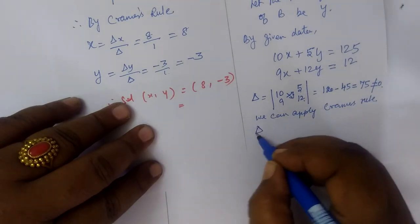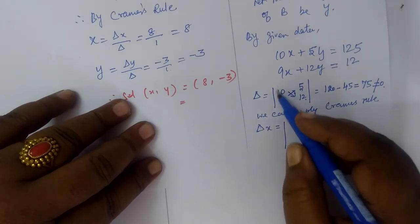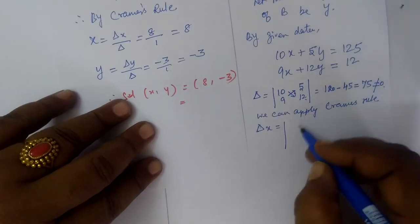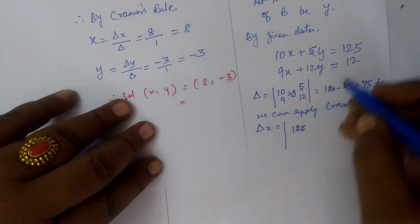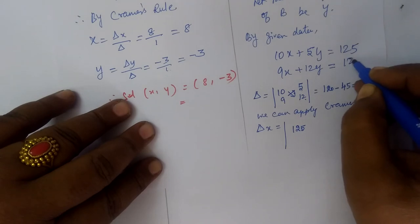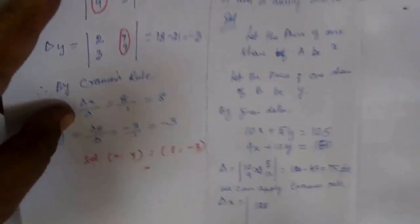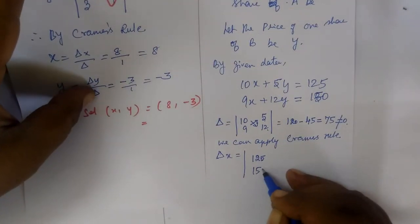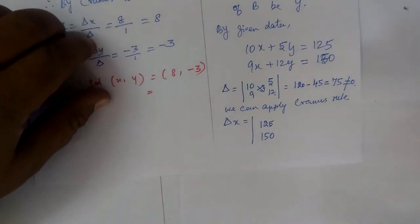Now we calculate del X. Del X: we replace X coefficients with constants, so 125 and 150 here, then 5 and 12. Cross multiply: 125 into 12, then 150 into 5.